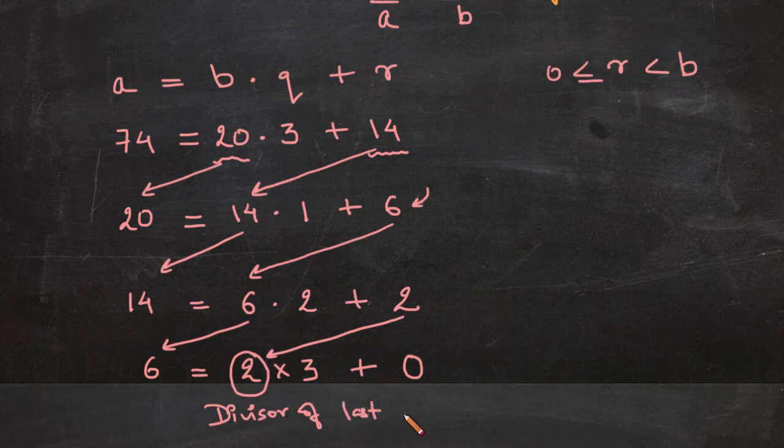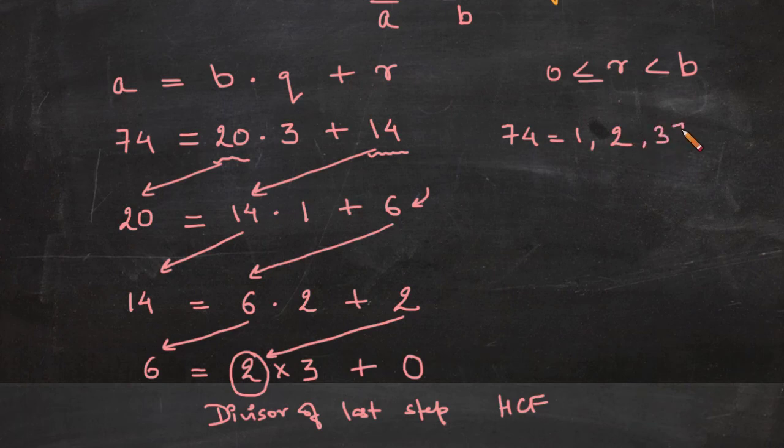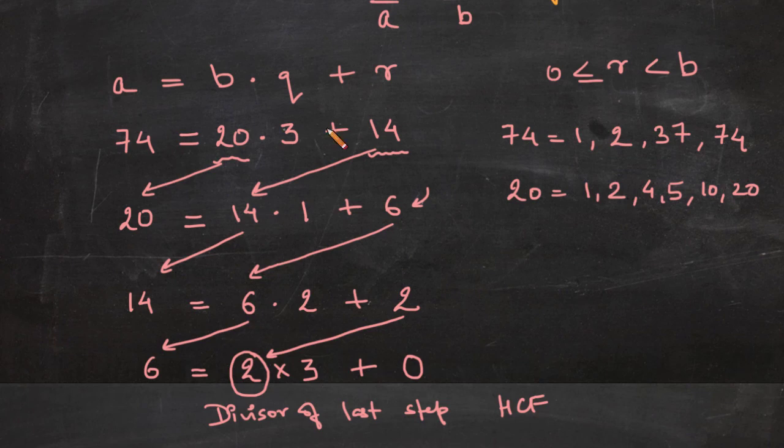To verify this, let's find HCF quickly through prime factorization. So 74, what would be the factors? 1, 2. Now 2 thirty-sevens are 74, so 2 and 37 both would be the factors. Will 3 be the factor? Sum of digits is 11, so 3 won't be the factor. I think that's it, the final factor would be 74 itself. For 20, the factors are 1, 2, 4, 5, 10, and 20. So out of these the common factors are 1 and 2, and the highest common factor would be 2, which is what we got here.